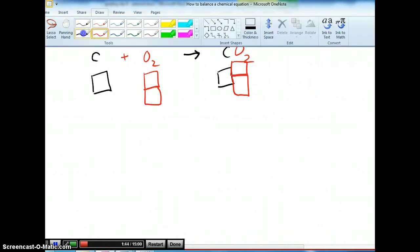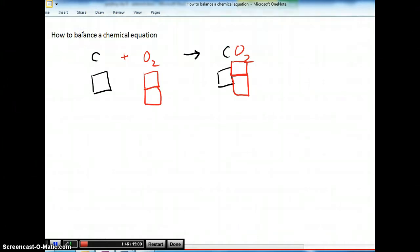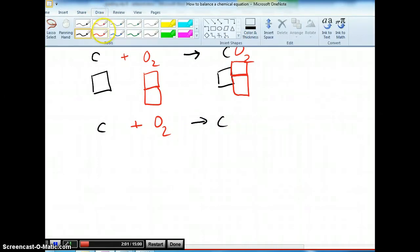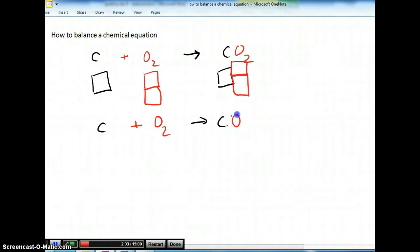But if I have, let's say, a different reaction, where one carbon, adding some oxygen, and instead of making CO2, I'm only making CO, carbon monoxide.